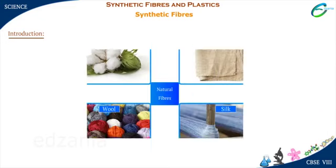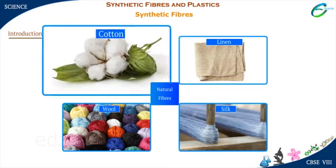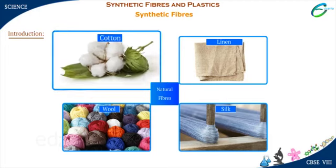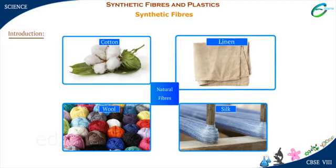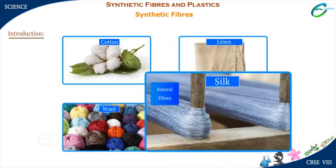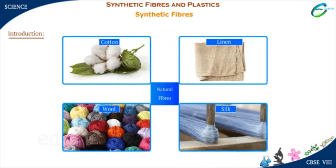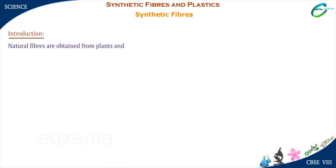Some of the most common natural fibers used in clothing are cotton, linen, wool and silk. We get these natural fibers from plants and animals.